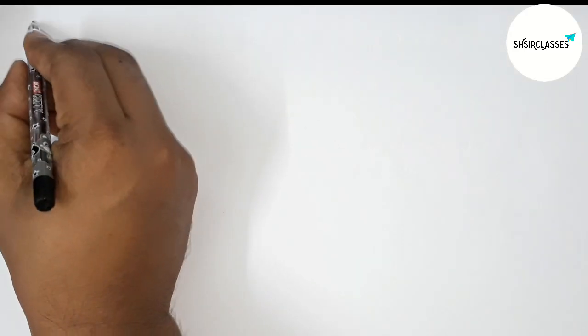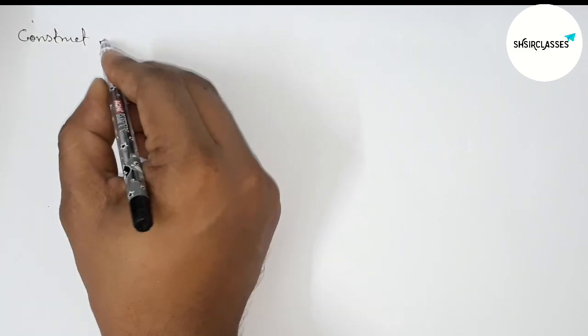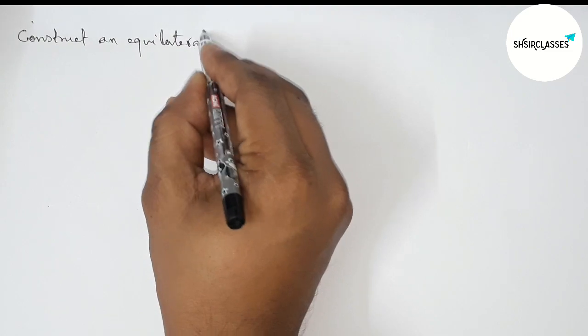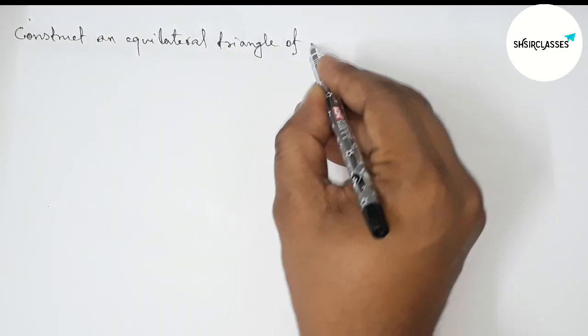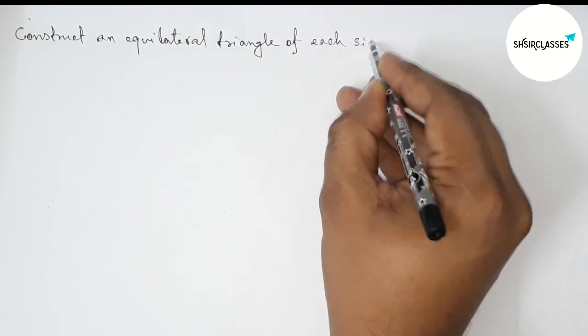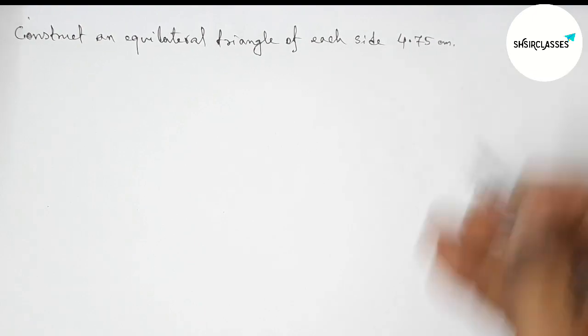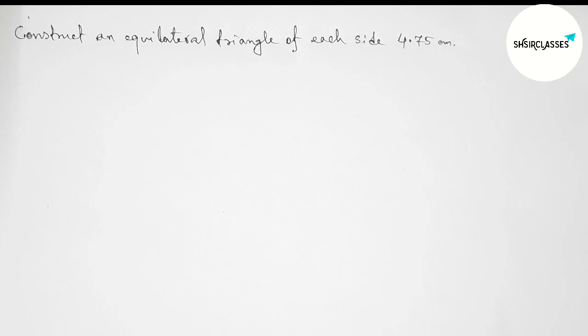Hi everyone, welcome to SI Share Classes. Today in this video we have to construct an equilateral triangle of each side 4.75 centimeters in an easy way. So please watch the video till the end. Let's start the video.